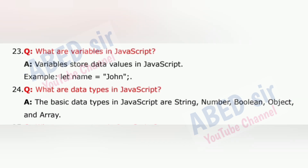Question 23: What are variables in JavaScript? Variables store data values in JavaScript. Example: let name = 'John'.